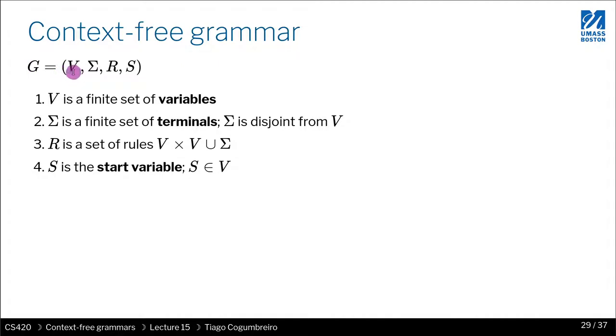V is the finite set of variables. We usually use uppercase letters for variables. Then Sigma is our finite set of terminals. Note that Sigma has to be disjoint from V. So all the variables cannot also be terminals. You cannot have something that is both a variable and a terminal. That does not make sense, and this rule is just enforcing that.